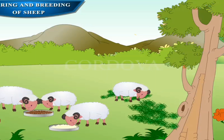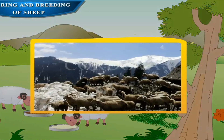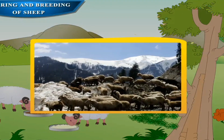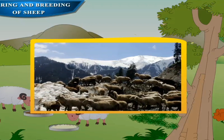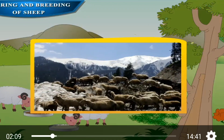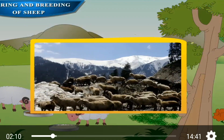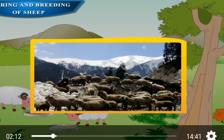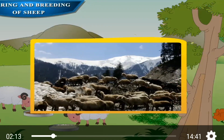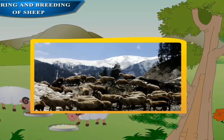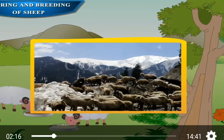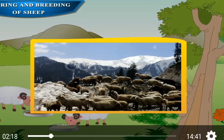In India, sheep are mainly reared in the hilly regions of Jammu and Kashmir, Himachal Pradesh, Uttarakhand, Arunachal Pradesh and Sikkim, and in the plains of Haryana, Punjab, Rajasthan and Gujarat.